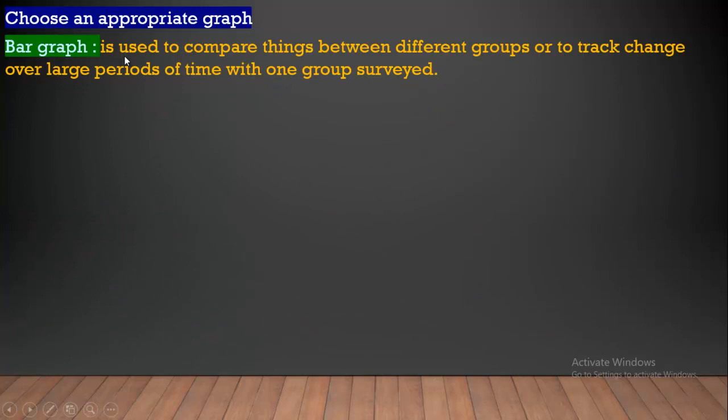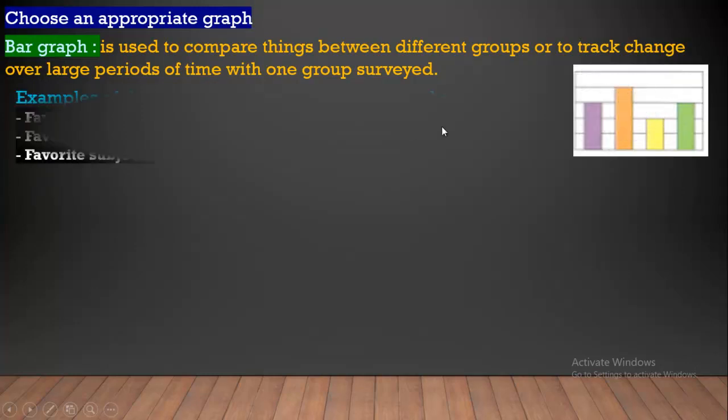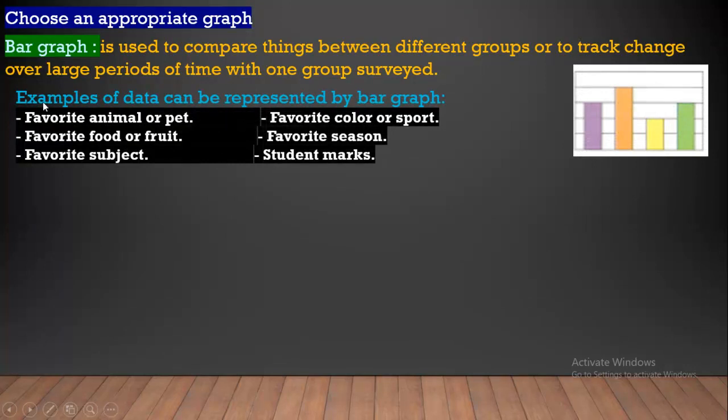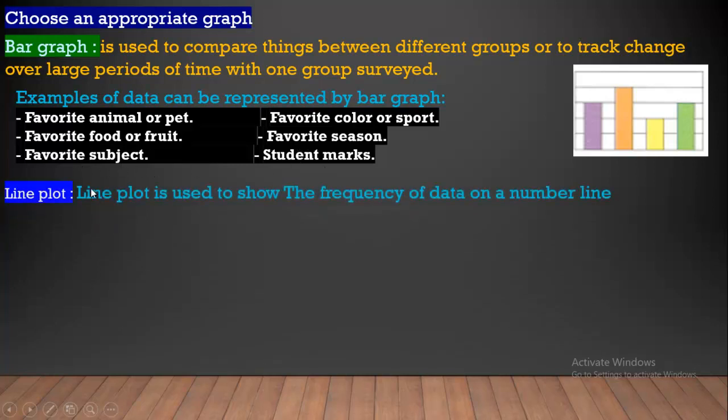Choose an appropriate graph. Bar graph is used to compare things between different groups or to track changes over large periods of time with one group surveyed. Examples of data can be represented by bar graph: favorite animal or pet, favorite color or sport, favorite food or fruit, favorite season, favorite subjects, student marks.